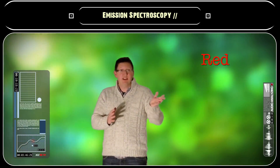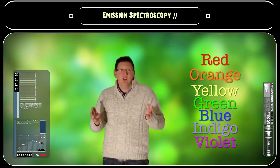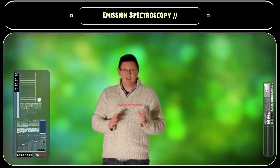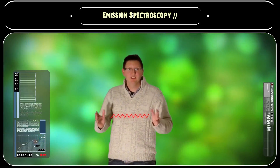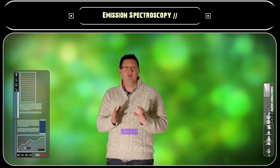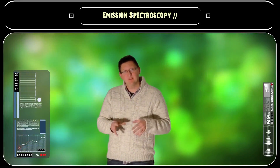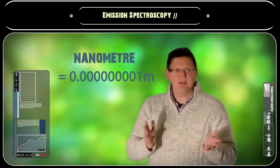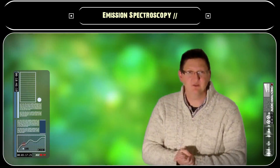It's made up of colours like red, orange, yellow, green, blue, indigo, and violet, all having slightly different wavelengths — with red having the longest at around 700 nanometres, and violet having the shortest at around 400 nanometres, where a nanometre is just 1 times 10 to the minus 9 metres, or a billionth of a metre.